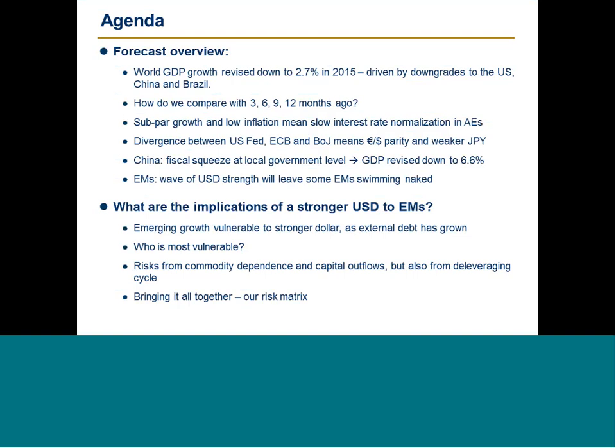We're going to touch on the divergence between the U.S. Fed, the ECB, and the Bank of Japan and their implications for exchange rates. Then briefly we'll discuss China, explaining the reasons for the downgrade, which is related to a fiscal squeeze at the local government level. Then I'll build the bridge for Adam's presentation about emerging markets — the recent wave in U.S. dollar strength will probably leave some emerging markets swimming naked. Adam will then discuss implications of a stronger dollar, the buildup in external debt, which countries are most vulnerable, and present a risk matrix.